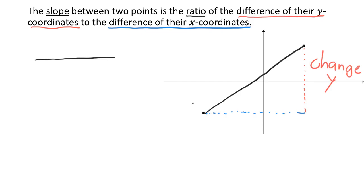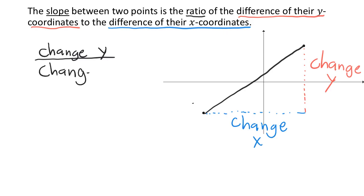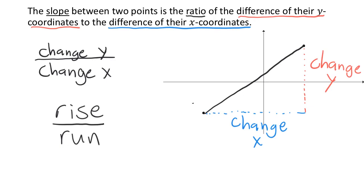By the same token, the difference of their x-coordinates is another way of saying the change in x as we move from the first point to the second — so that is the change in x. Those are the components of our ratio: the top value is the change in y, and the bottom value is the change in x. Notice that these values correspond to a horizontal movement in the case of x, and a vertical movement in the case of y. So sometimes this ratio is written as the rise over the run — the rise being the vertical change, and the run being the horizontal change.